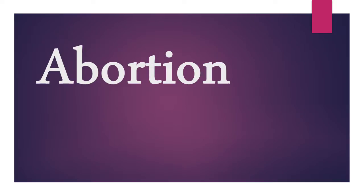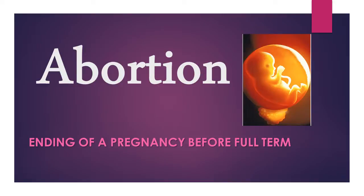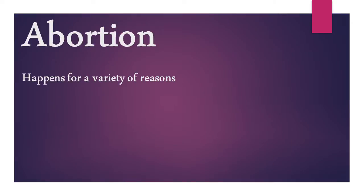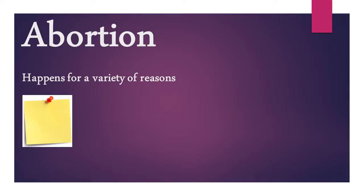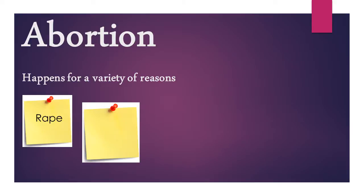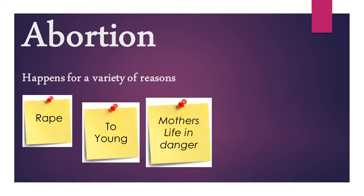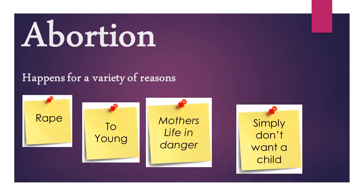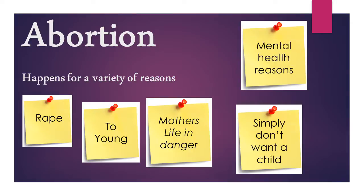Moving on to abortion — abortion is where you end a pregnancy before full term, or the termination of a pregnancy before full term. Abortion happens for a variety of reasons: it could be because of rape, because the person is too young, because the mother's life is in danger, because they simply do not want a child, or for mental health reasons. You need to think about whether abortion could be right or wrong in each of those situations.